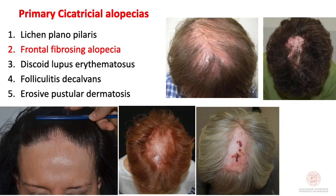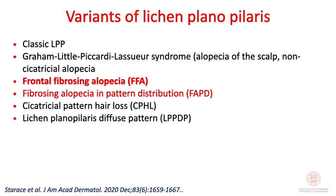Frontal fibrosing alopecia is classified among the primary cicatricial alopecias, together with lichen planopilaris — which is the most frequent — discoid lupus erythematosus, folliculitis decalvans, and erosive pustular dermatosis. Lichen planopilaris and frontal fibrosing alopecia are classified as variants of lichen planopilaris, and you can see the different variants of LPP.